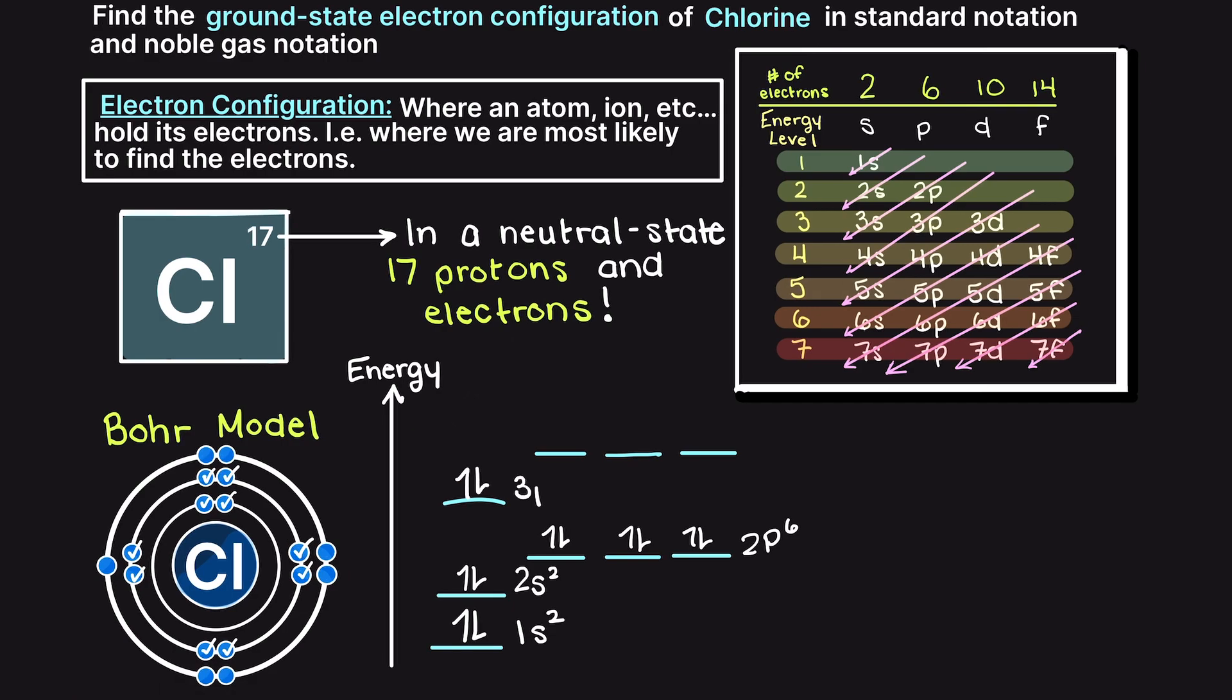Continuing down our diagram from above, we can see that we have 3s, and then 3p. Filling the s orbital with 2 electrons, we are left with 5 remaining electrons. Then our remaining 5 electrons will be placed into the 3p subshell.